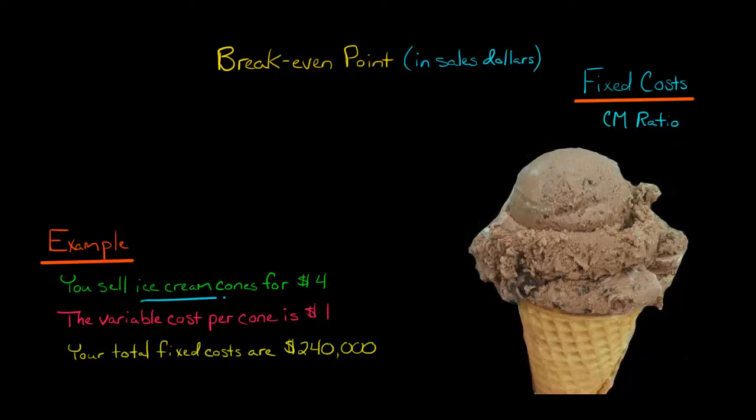So let's say you sell ice cream cones. You've got a big, delicious ice cream cone here, and you sell it for $4 each. That's your selling price. And then the variable cost per cone is $1. And then your total fixed costs for your company are $240,000.